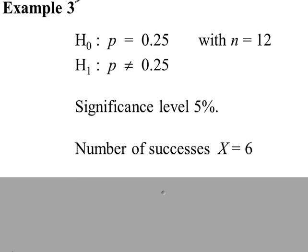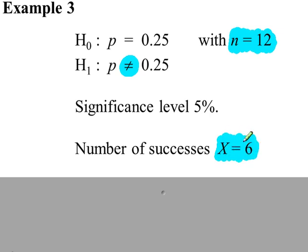Example 3: a two-tailed test where we have 12 trials, or a sample of size 12, and there were six successes in those 12 trials. So for the binomial distribution, n is 12 and p is 0.25.